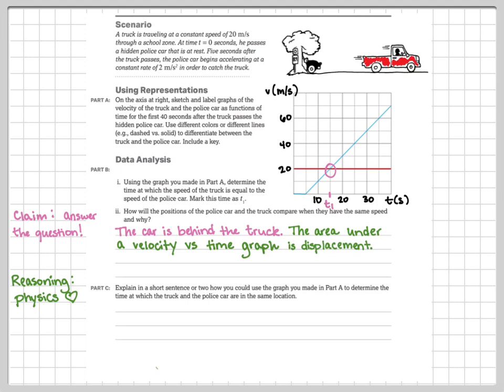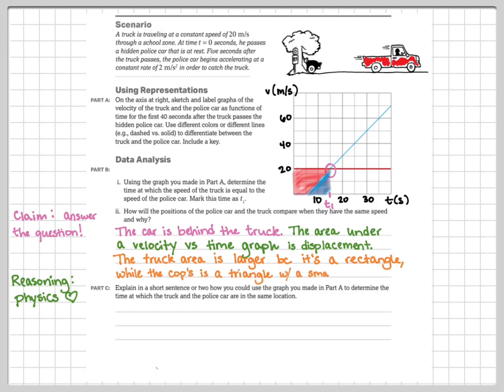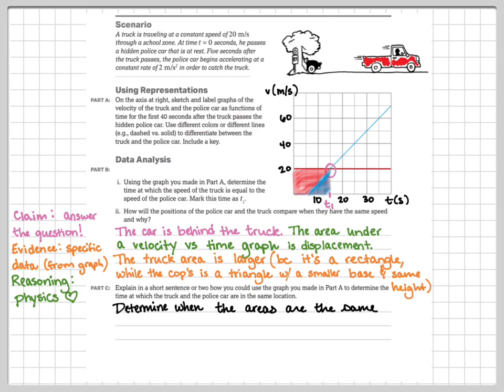You always want to bring in the physics — that's what the reasoning is. By physics knowledge, I know that for a velocity versus time graph, the area underneath the velocity graph is useful for determining displacement. That's a universal fact for any velocity graph. Your evidence is something specific about this particular scenario: the area underneath the truck's graph makes a rectangle, which has a much larger area than the triangle made by the police car's graph, because the triangle has a smaller base with the same height.